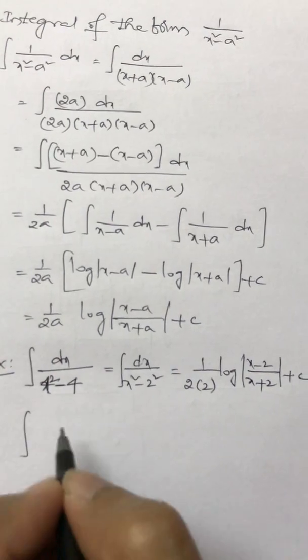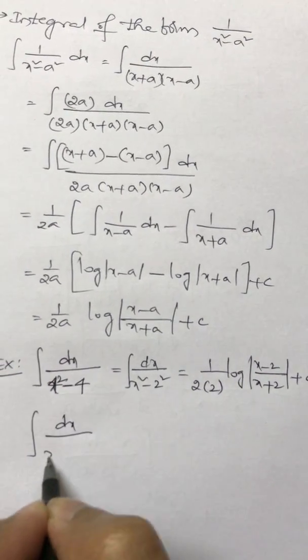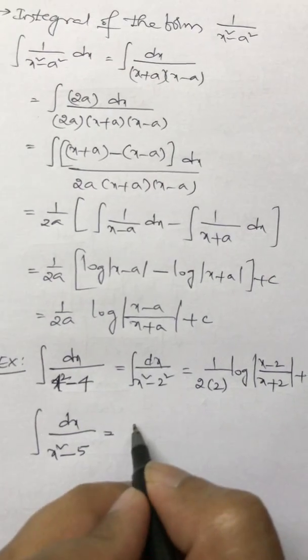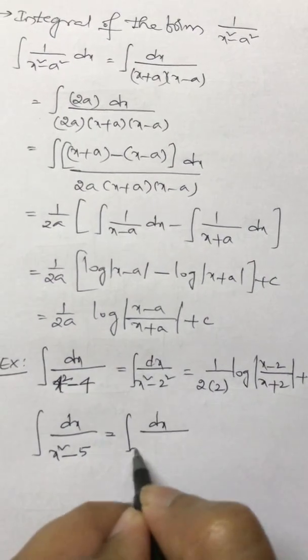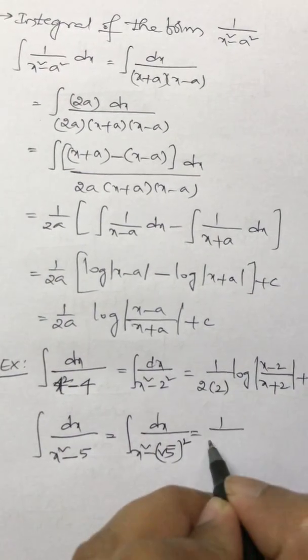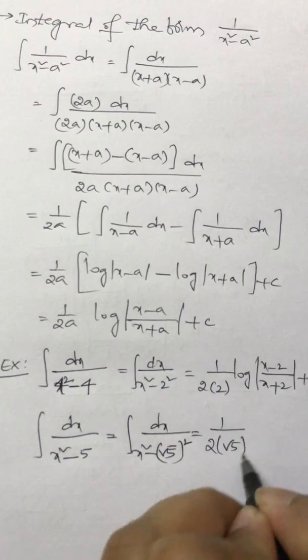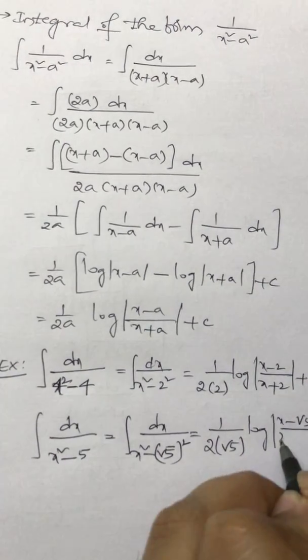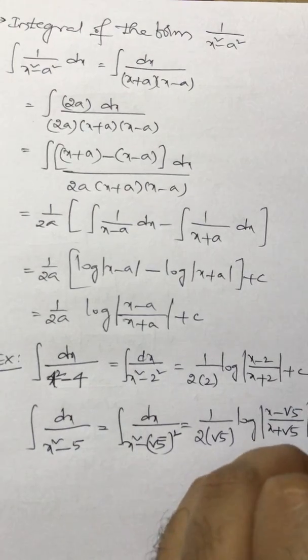So if I consider another example. Integral dx by x square minus root 5 whole square. So 1 by 2 into root 5 log mod x minus root 5 by x plus root 5 plus c.